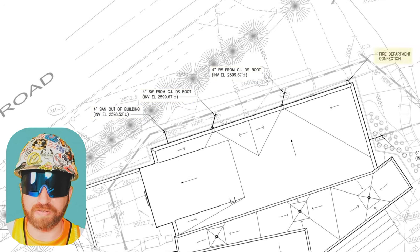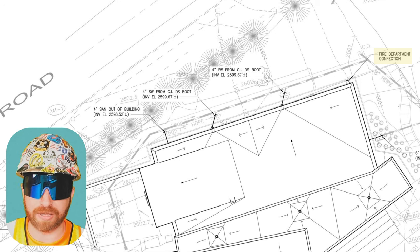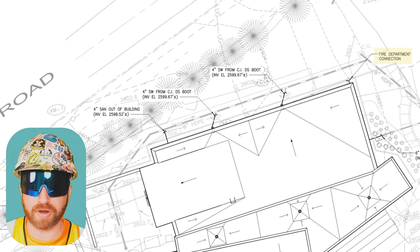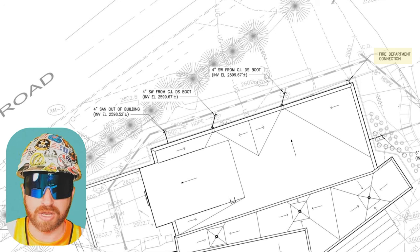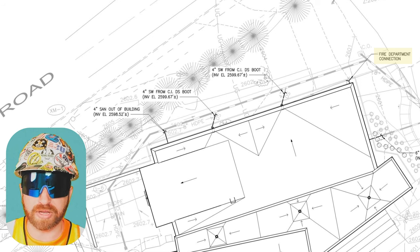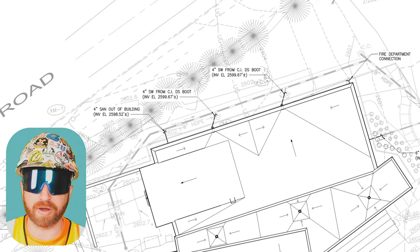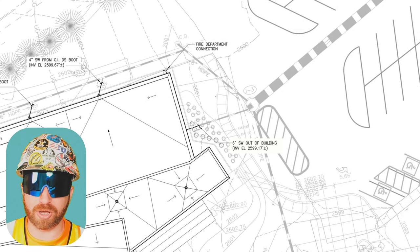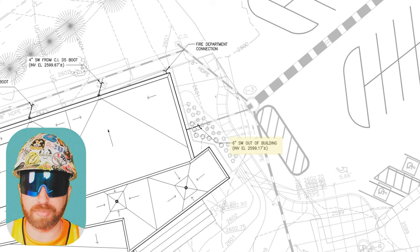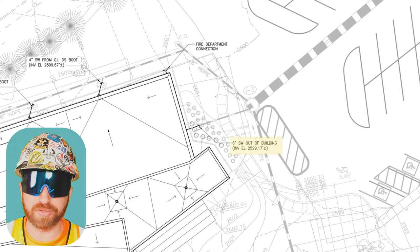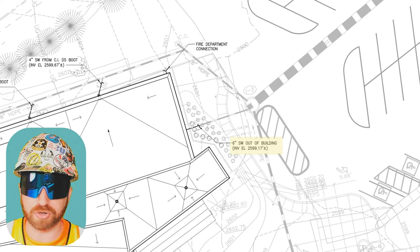Further along this drawing, we have the fire department connection, also abbreviated as FDC. This will be important to our fire sprinkler contractor as it allows the fire department to connect their pumper truck to this line, which supplements water into the sprinkler system during a fire. Last, we see another SW or stormwater connection leaving the building. If you watched my other civil drawing review video in this series, I covered this area specifically, which will give you a full picture of how the building gets rid of stormwater in general.